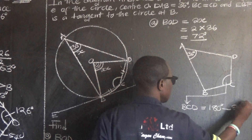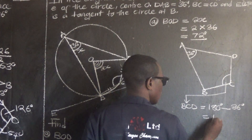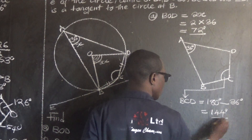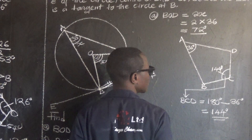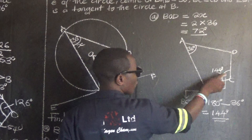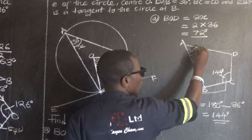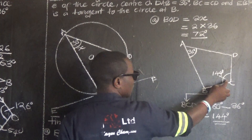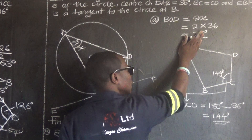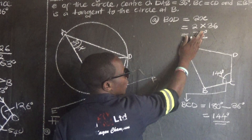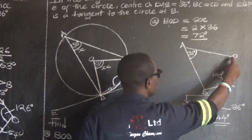So for us to find angle BCD, it is very simple. Just say: angle BCD equals 180 degrees minus the opposite angle, which is 36. So 180 minus 36 gives us 144 degrees. So opposite angles of the cyclic quadrilateral are supplementary, adding up to 180. Since we have 36, we get 180 minus 36 equals 144 degrees as angle BCD.